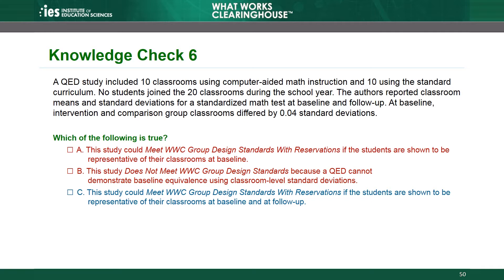Choice A is incorrect because the study must establish that students are representative of their classrooms at both baseline and follow-up in order to meet WWC group design standards with reservations. Choice B is incorrect because although cluster-level standard deviations cannot be used to establish equivalence of individuals, they can be used to establish equivalence of clusters.